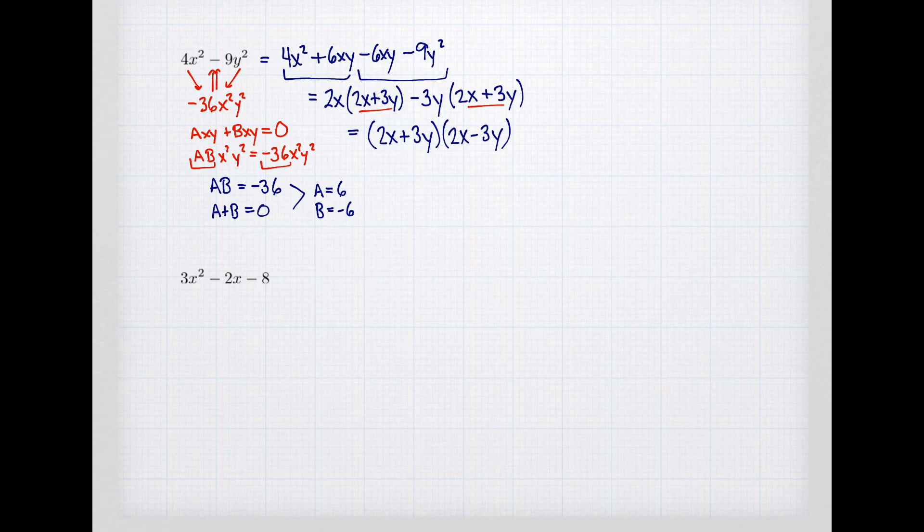And so how does this relate to what you learned with difference of squares? If I had an a squared minus b squared, the rule is that it's got to be a plus b times a minus b. The 2x is the square root of the 4x squared. And the 3y is the square root of the 9y squared. So the method of difference of squares is magically, well, it's not magic, it's math. Magically a consequence of grouping.